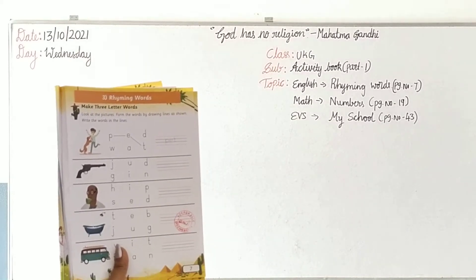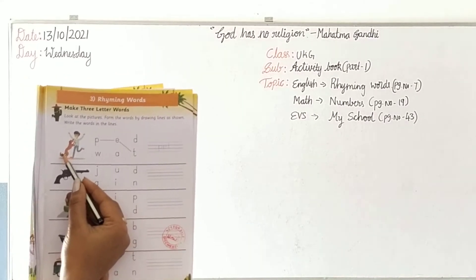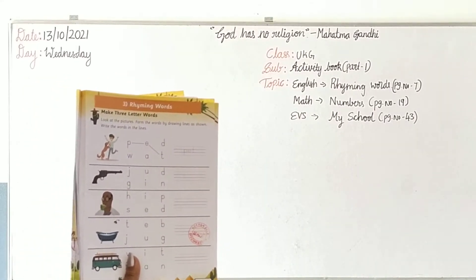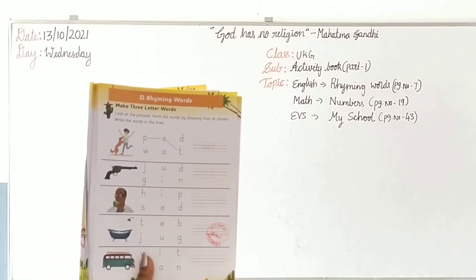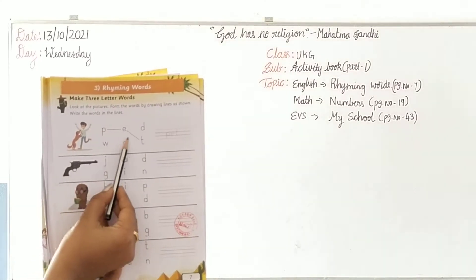Children, what is this? The dog is a pet animal. The dog is playing with the boy, isn't it? So what is the rhyming word? See, they have drawn the line also.